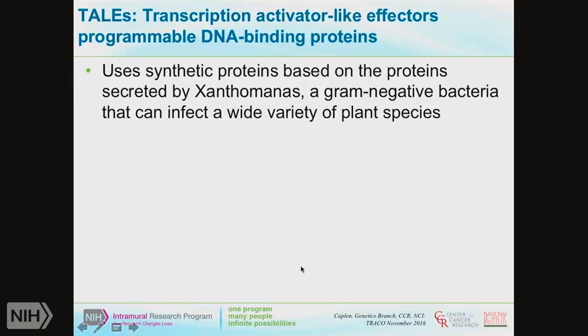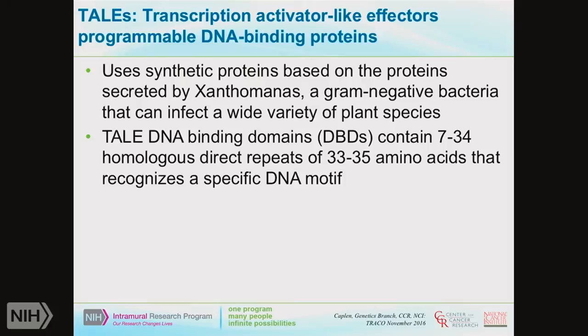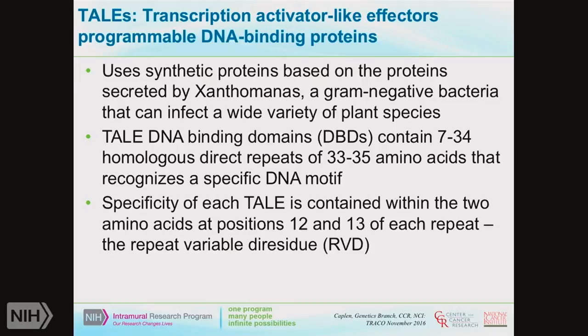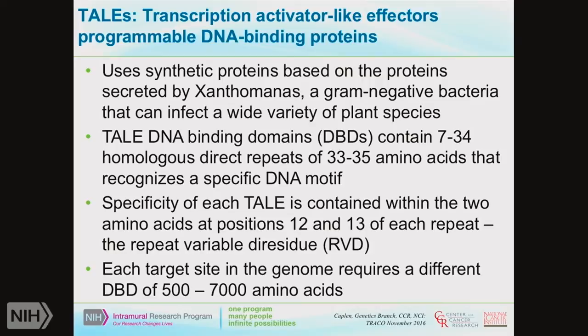TALENs make use of DNA binding domains containing 7 to 34 homologous direct repeats of 33 to 35 amino acids. These can be designed to recognize very specific DNA motifs. The specificity of each TALEN is contained within the two amino acids at positions 12 and 13 of each repeat — known as the repeat variable diresidue. Designing these is really difficult, and there are companies that will do the designs for you. Each target site in the genome requires double-stranded DNA binding domains between 500 and 7,000 amino acids, making these complex effector molecules. This is probably why they never really caught on.